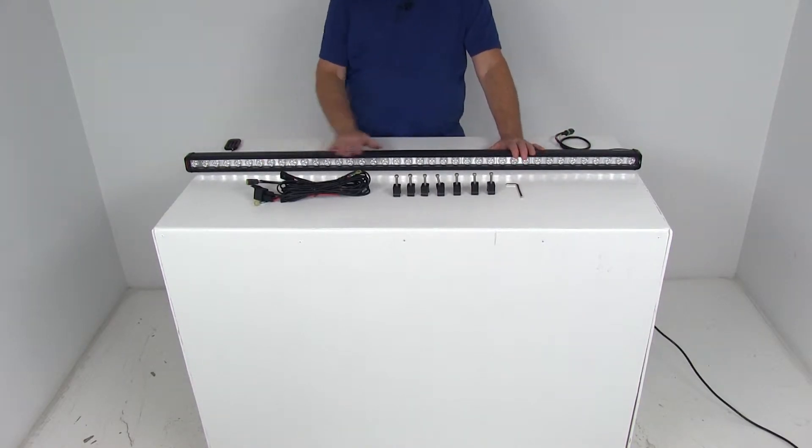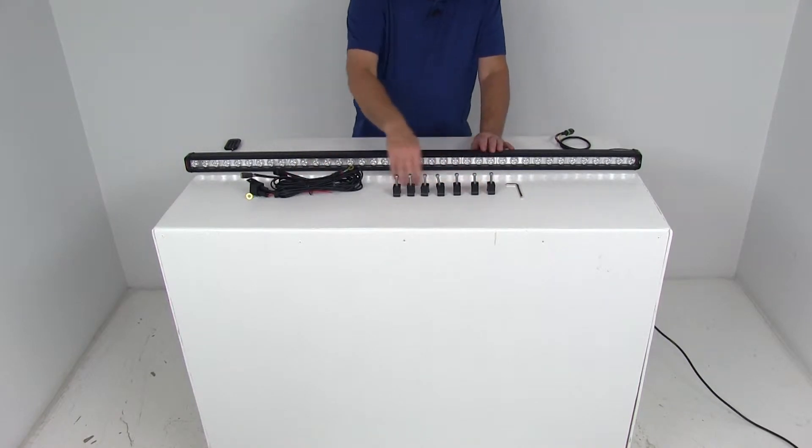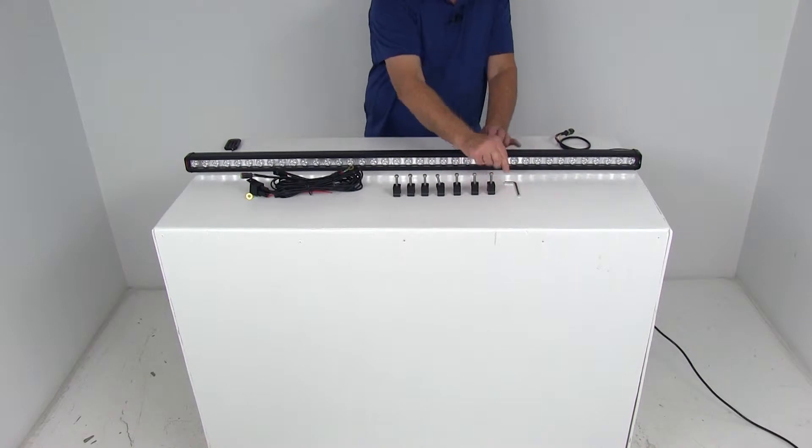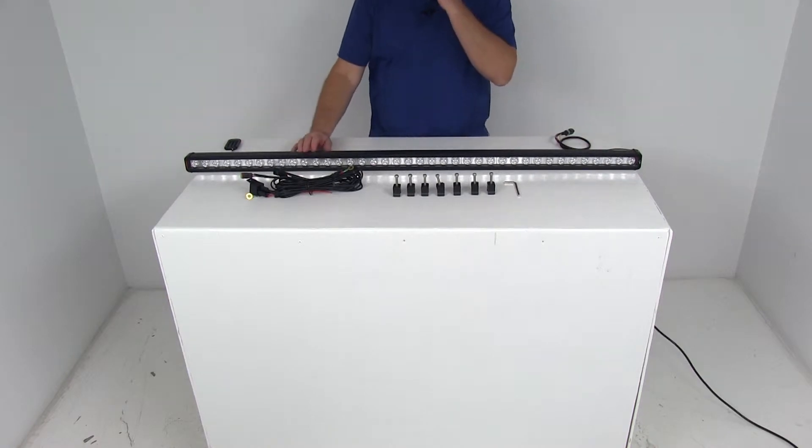Now this part number will include everything shown here on the table: the light bar, the wiring harness with the toggle switch, seven of the mounting hardware to install it, and then an Allen wrench which is used. There's an Allen wrench bolt on each side here that when you adjust your light bar you can tighten it down if you want it in a certain position.